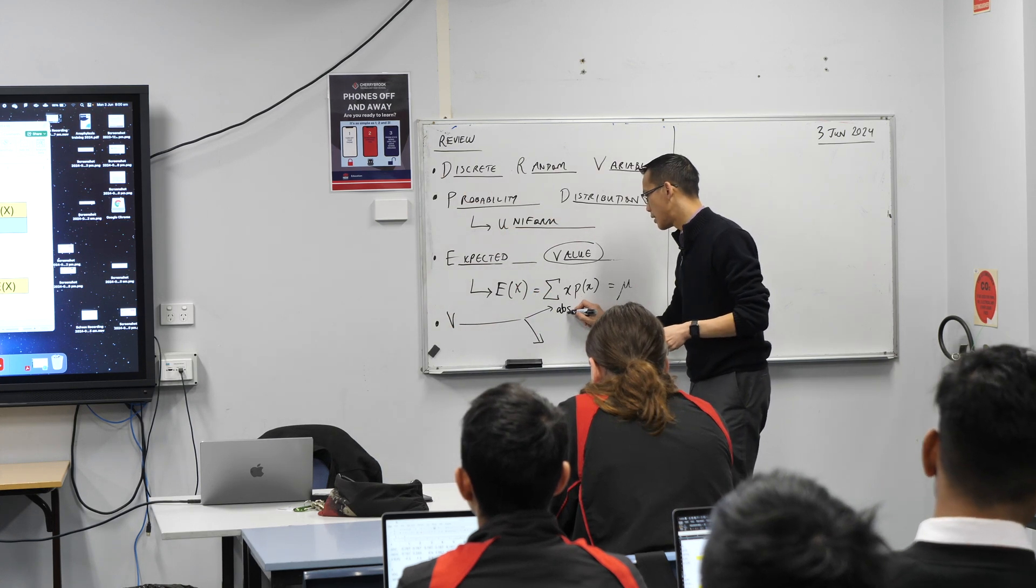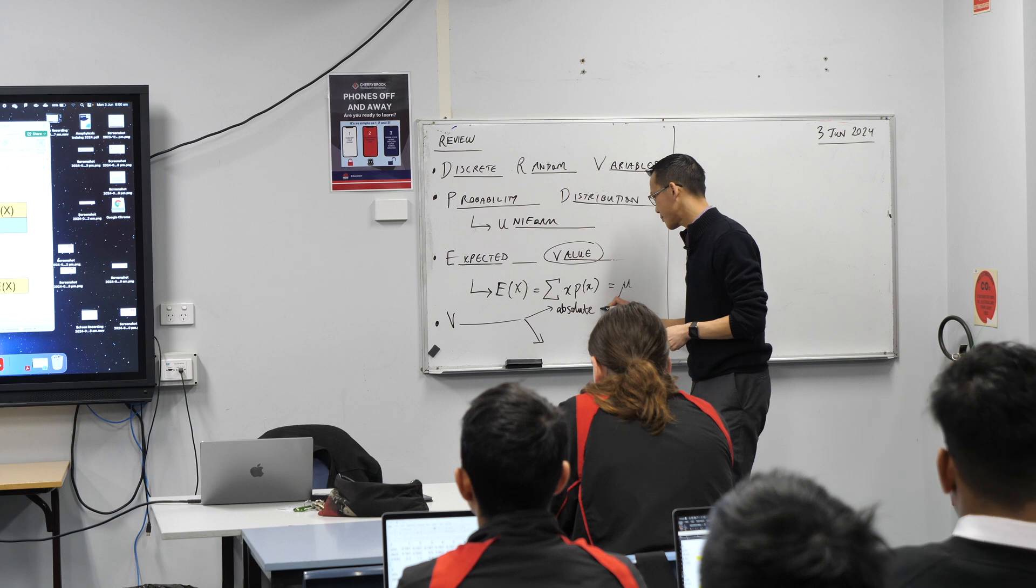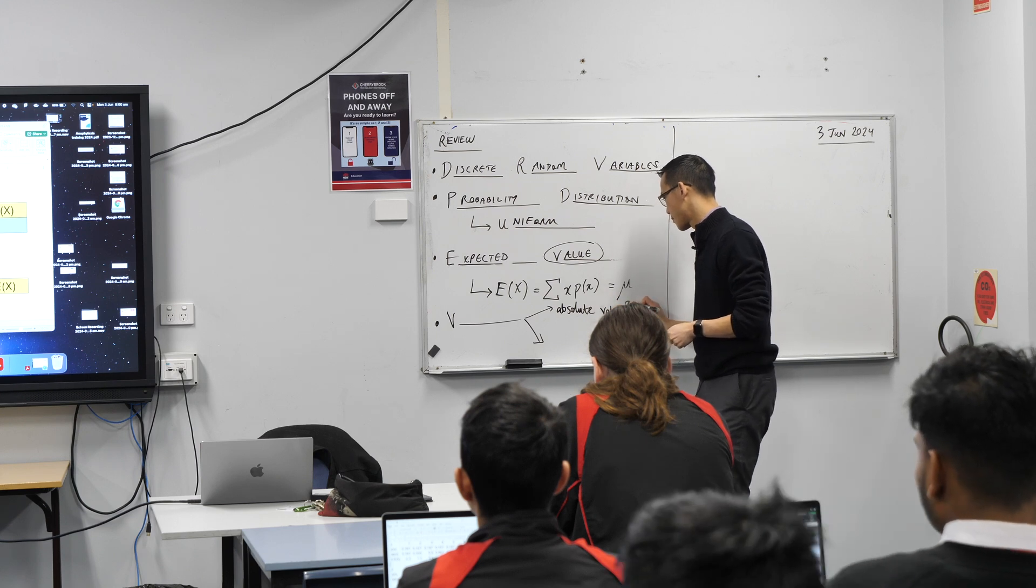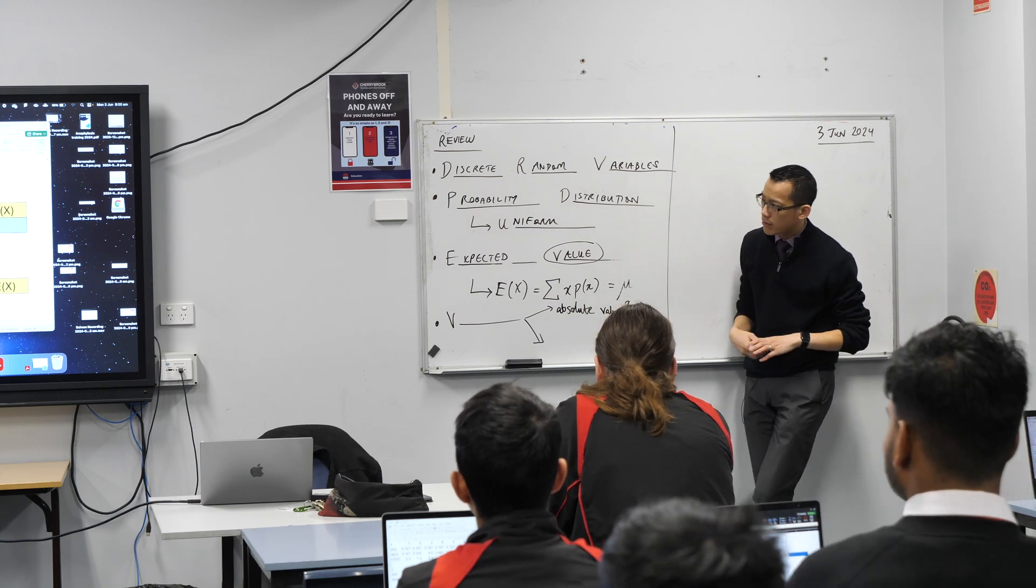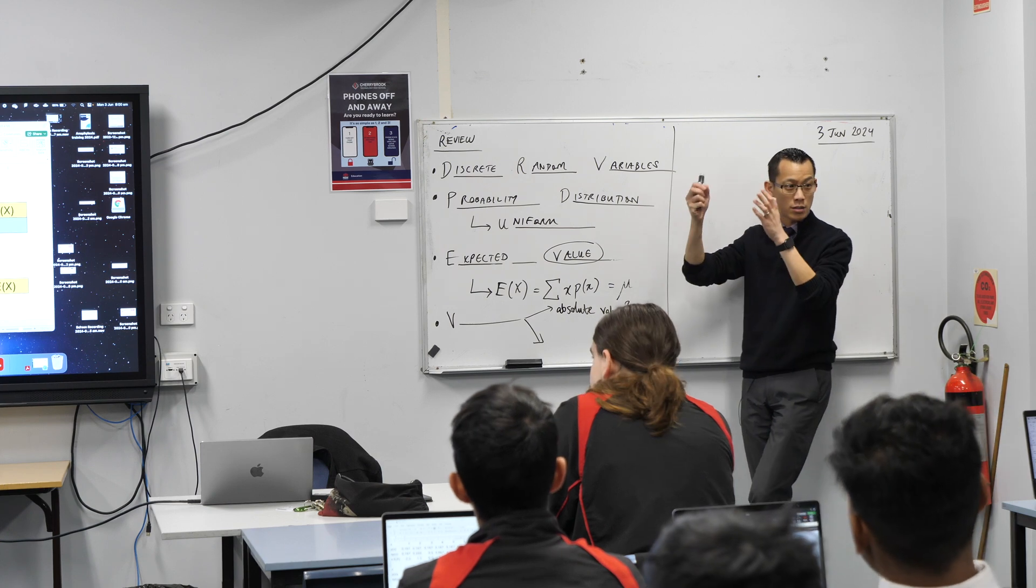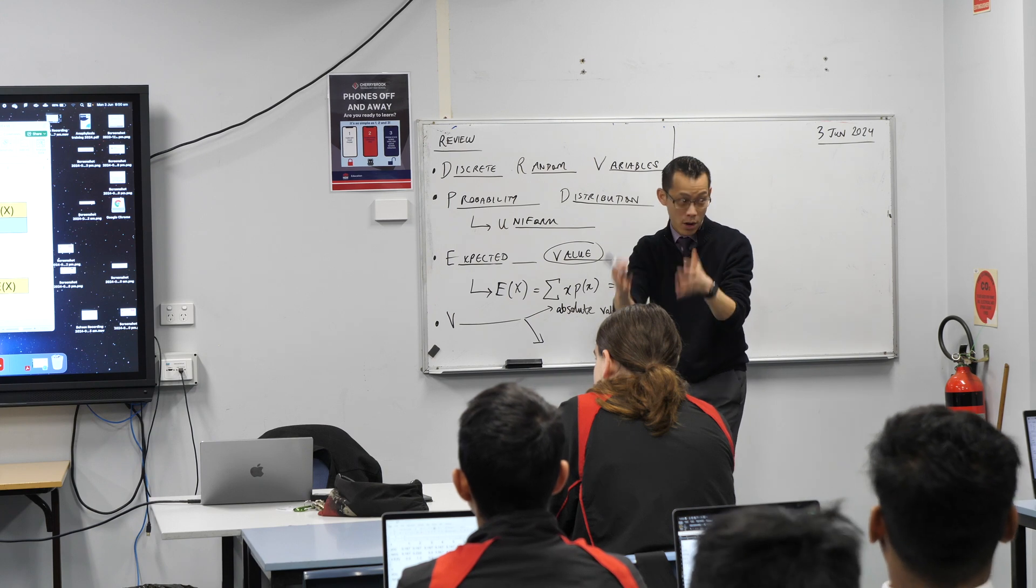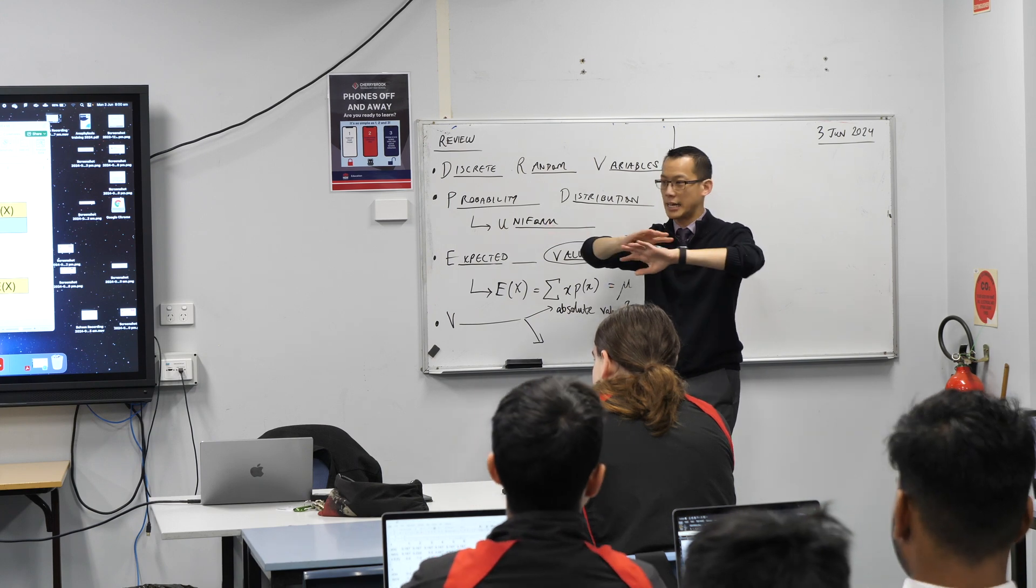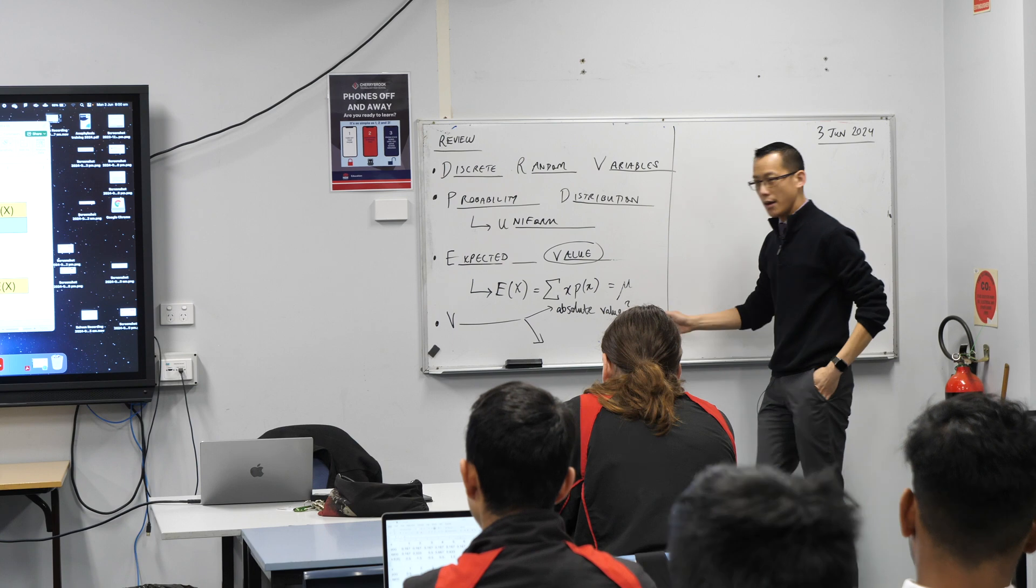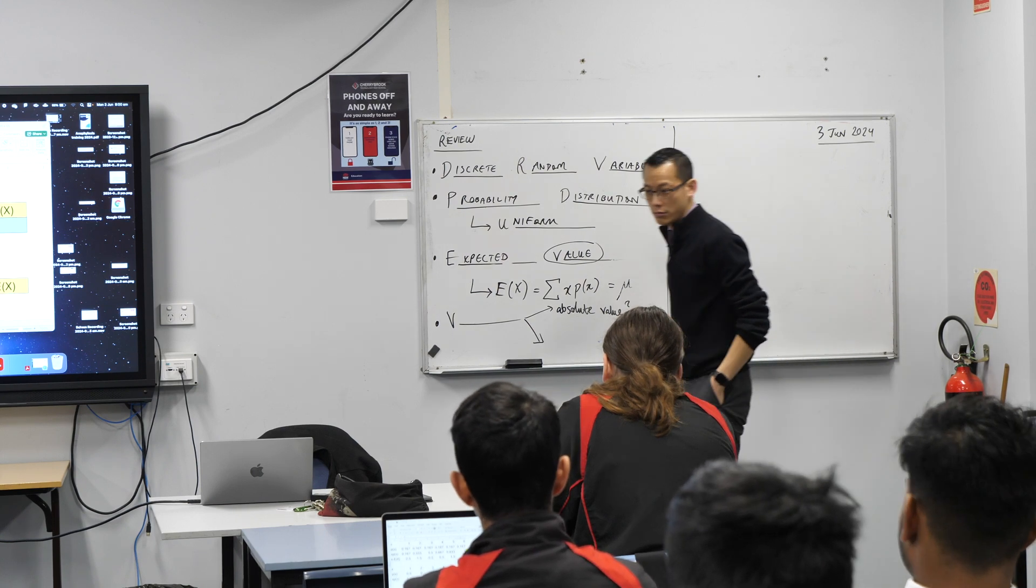We could use the absolute value to say, you know what, I don't want negative two and a half. I just want two and a half. That's how far away it is. I don't want negative one and a half. I just want one and a half because that's how far away things are. That gives me a sense of spread.